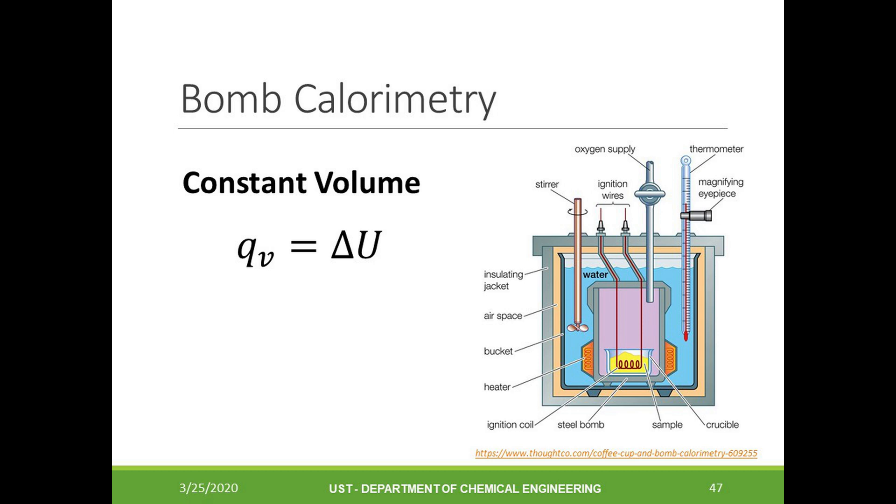We have two types of calorimeters. One type is shown in this slide. If the reaction vessel is tightly sealed, this is known as the bomb calorimeter. In this case, the results of the measurement is a change in the internal energy, or the delta U of the reaction.